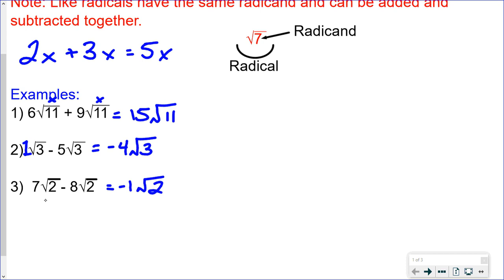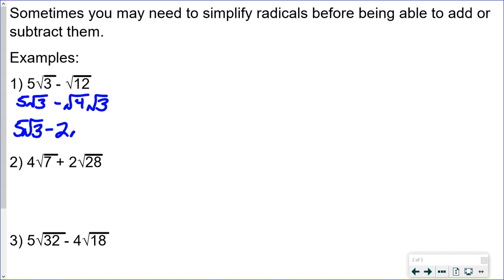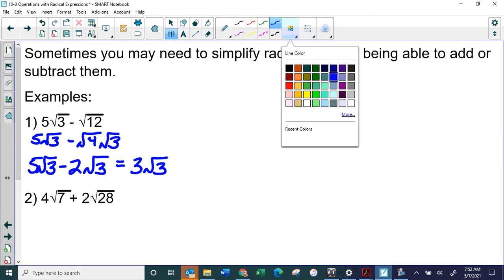The key is you can combine radicals using addition or subtraction if they have the same radicand. Sometimes you may need to simplify the radicals first. For example, this has a square root of 3 and a square root of 12, so you can't combine them yet. But the square root of 12 simplifies to the square root of 4 times the square root of 3, and the square root of 4 is 2. Now you have 5 times the square root of 3 minus 2 times the square root of 3, which gives 3 times the square root of 3.